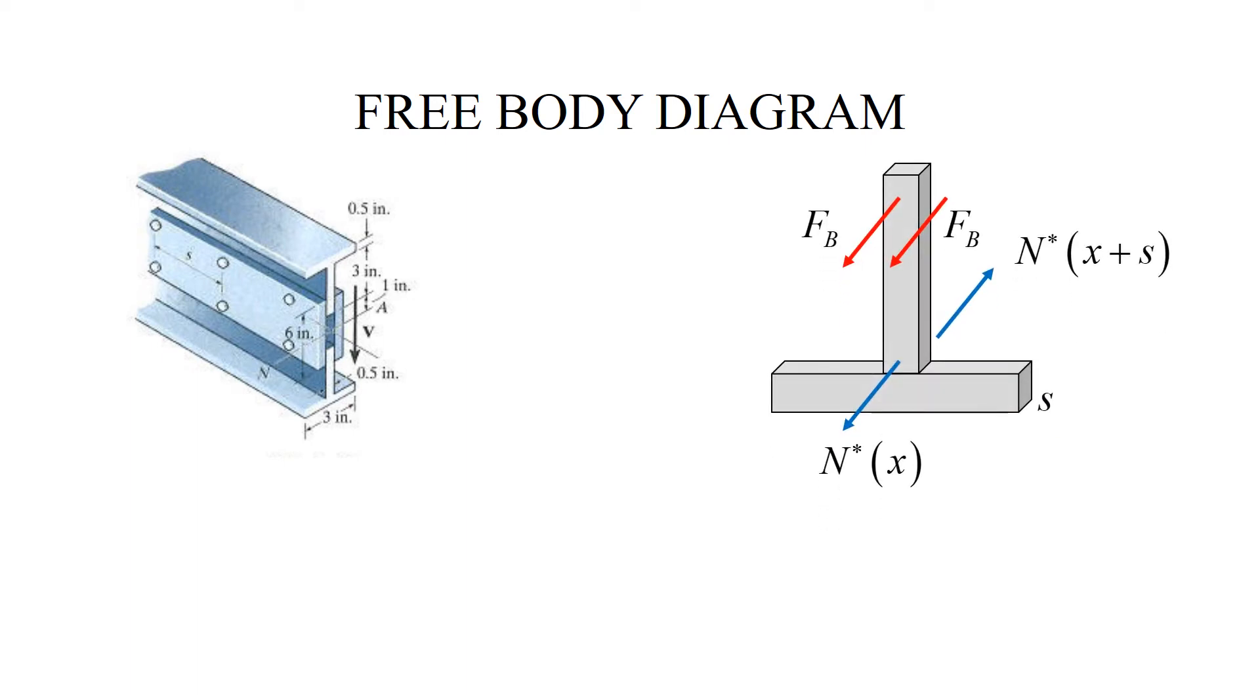Now I'm ready to draw a free body diagram. This is my entire cross section and this is my bottom T. Here I show the force N*(x), the resultant of the stresses sigma acting on the cross section x. The length of this element along the S axis is S. So the other force is N*(x+S). And the total shear force transmitted by the joints involves two bolts. Therefore, FB and FB. These are the bolts on both sides.